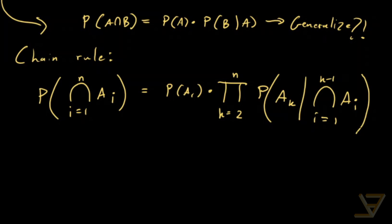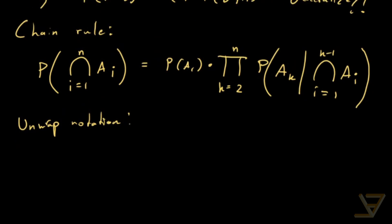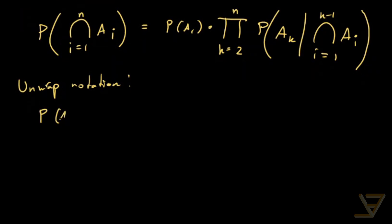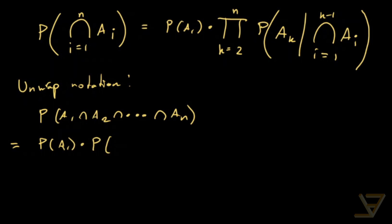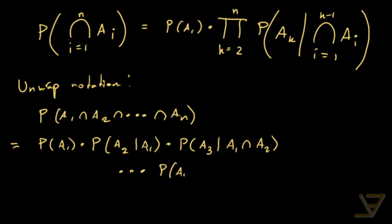This looks daunting, so let's unwrap the notation. What this is really saying is that the probability of A_1 intersect A_2 intersect all the way through to A_n is equal to the probability of A_1 times the probability of A_2 given A_1 times the probability of A_3 given both A_1 and A_2, all the way through to the probability of A_n given A_1 intersect A_2 intersect all the way through to A_{n-1}.